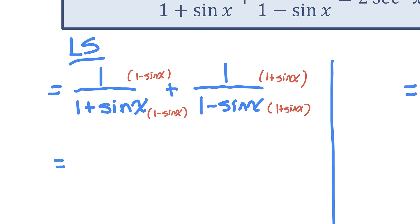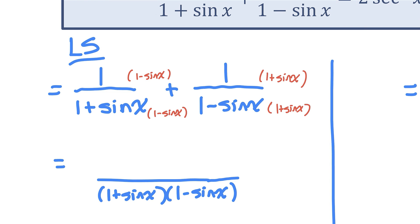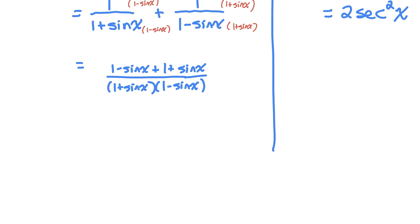So now I can rewrite those two terms as a single term over the common denominator, which is 1 plus sine x times 1 minus sine x. And in the numerator, I have 1 minus sine x plus 1 plus sine x. You should notice that we have a negative sine x plus a sine x — that's zero. So in the numerator, I'm just left with two.